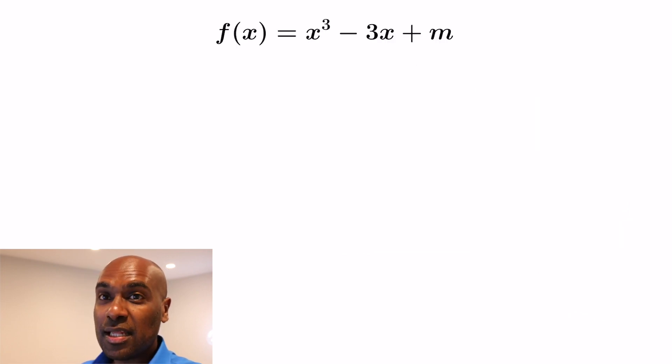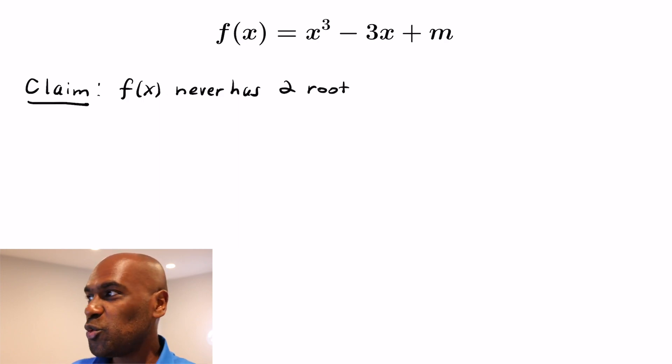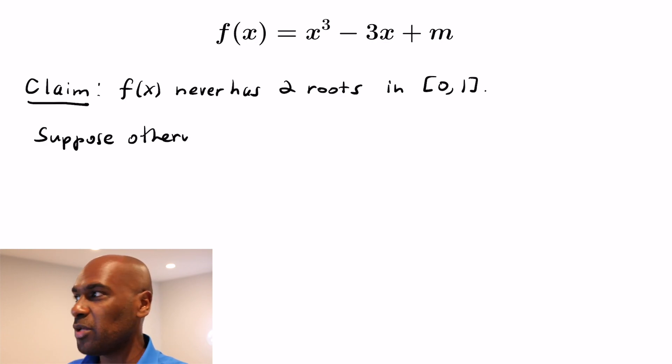The next example and the last example we'll have today is showing how the mean value theorem can actually say something about the roots of a given polynomial. So this polynomial here, f(x) = x³ - 3x + m, we're going to claim never has two roots in the interval [0,1], that is the closed interval [0,1]. Regardless of what value m takes on. Let's see why. We notice that this function is continuous everywhere and differentiable everywhere so we can use the mean value theorem here.